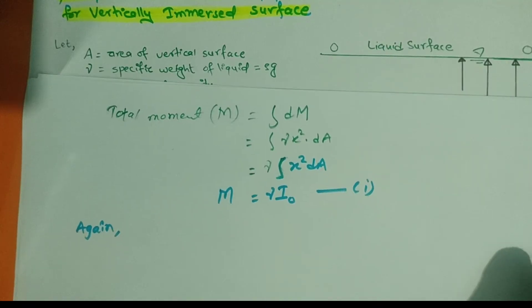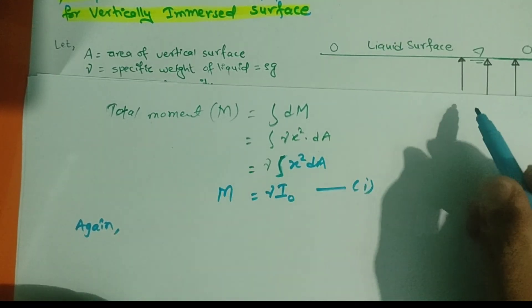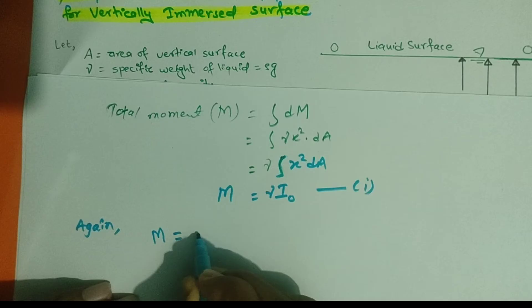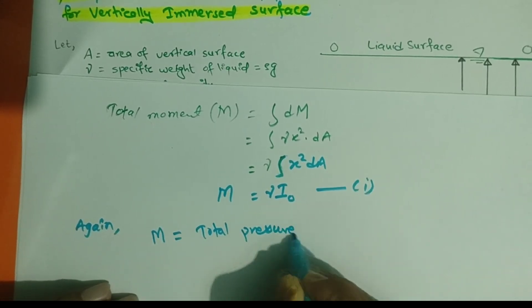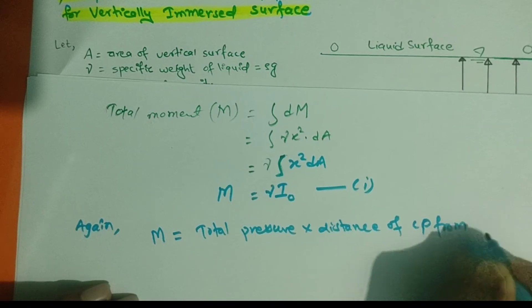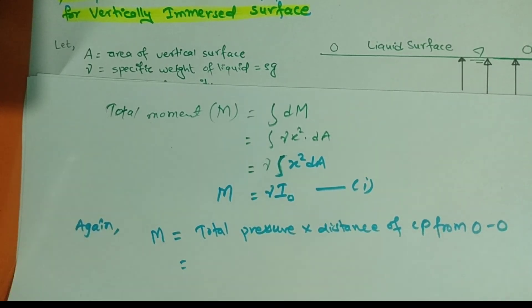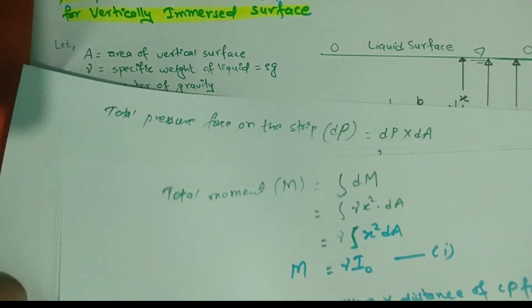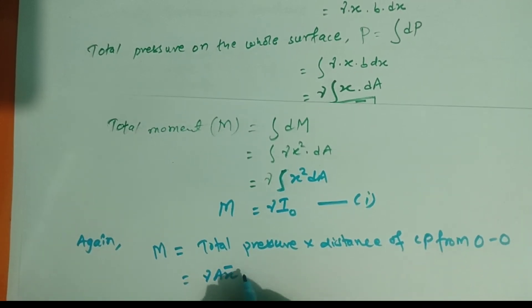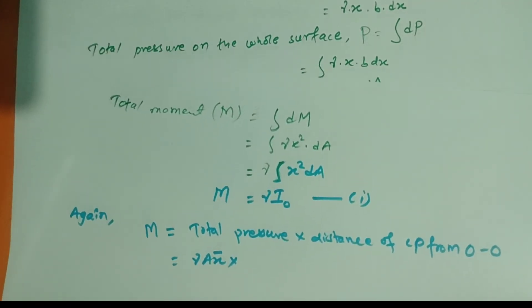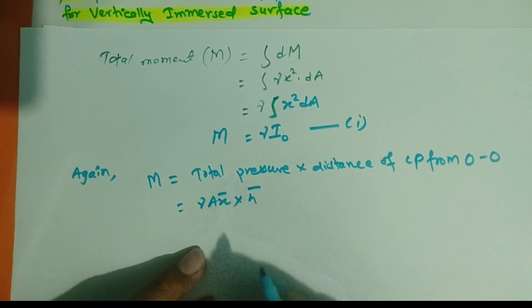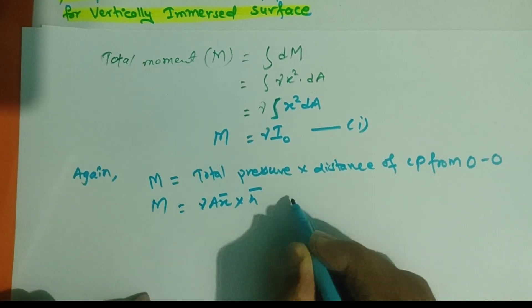This moment can also be calculated as the product of the total pressure on the whole figure and the distance of the center of pressure from the liquid surface: M = P · S̄ = γ·A·x̄ · S̄. This is taken as equation 2.